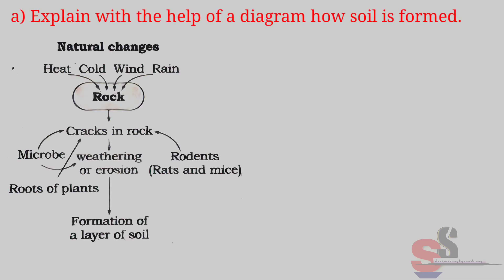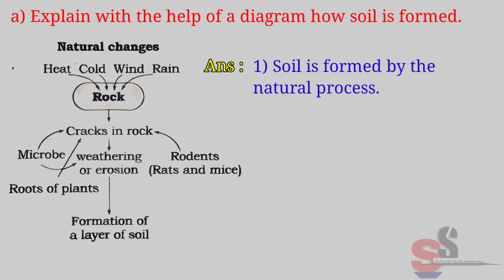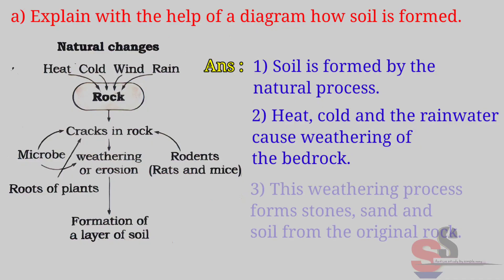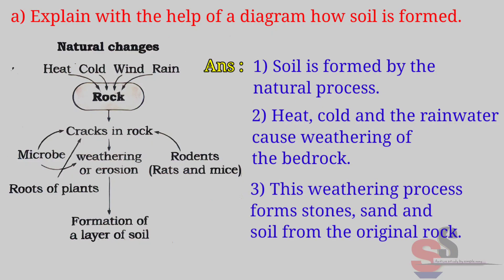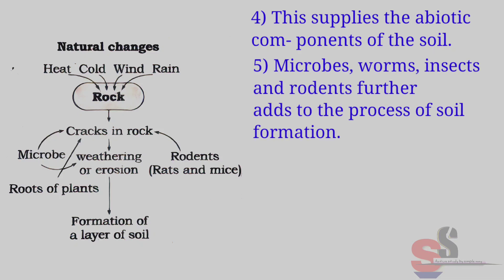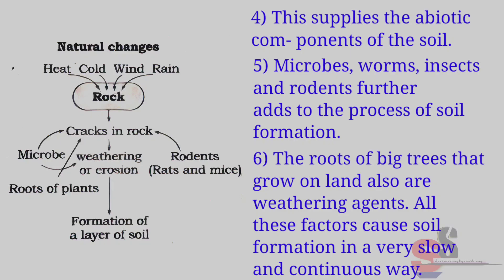A. Explain with the help of a diagram how soil is formed. Answer: Soil is formed by a natural process. Heat, cold and rain water cause weathering of the bedrock. This weathering process forms stones, sand and soil from the original rock, supplying the abiotic components of the soil. Microbes, worms, insects and rodents further add to the process of soil formation. The roots of big trees that grow on land are also weathering agents.